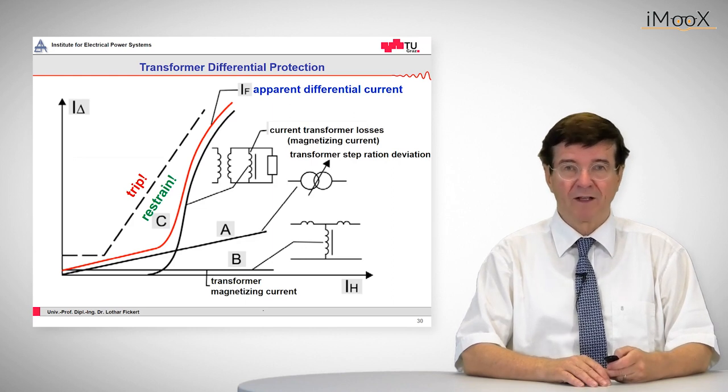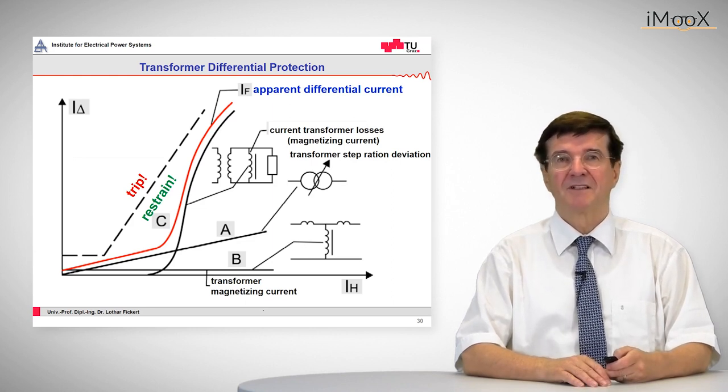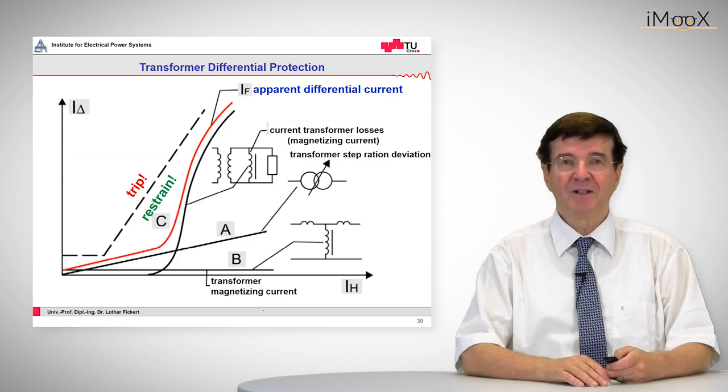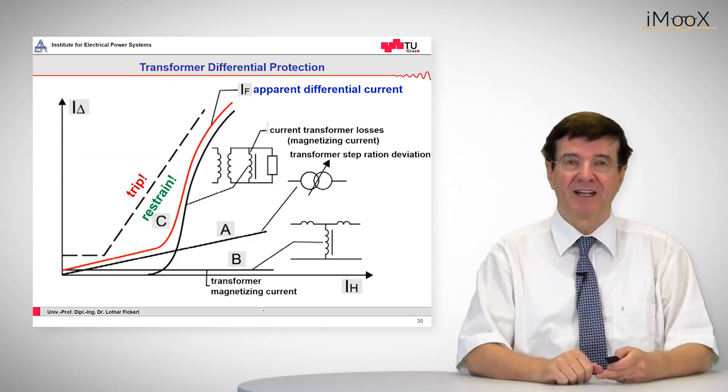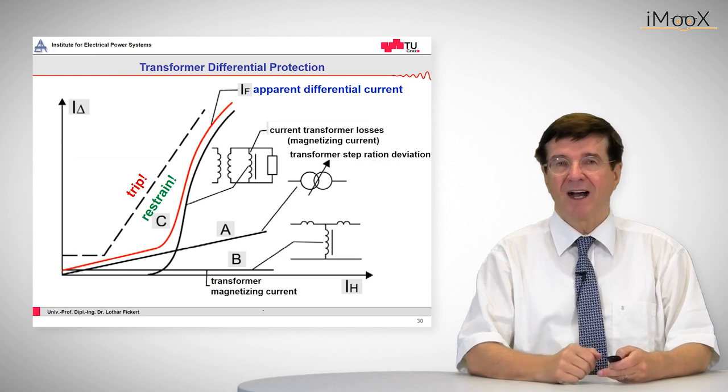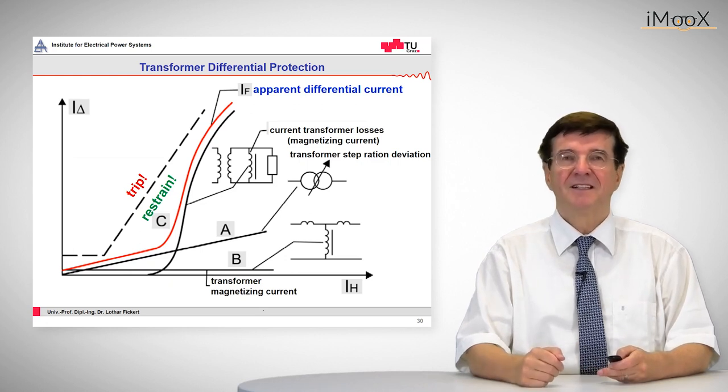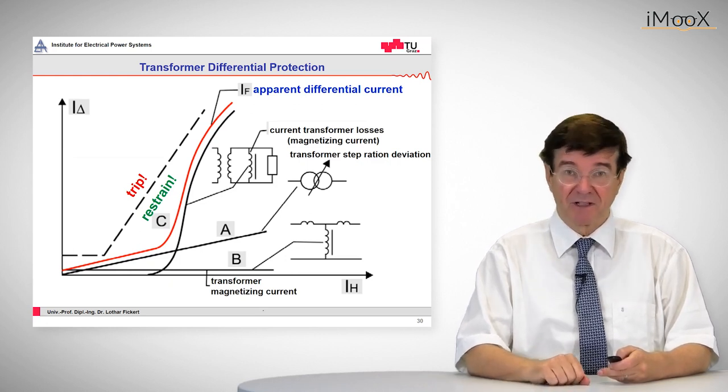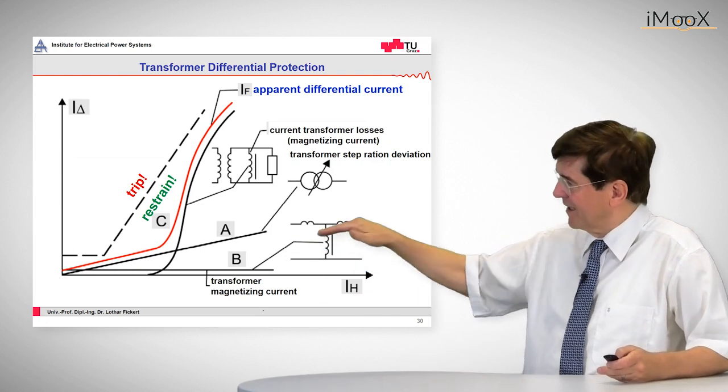For example, one is if we have a tap changing transformer where the ratio between the primary and the secondary side varies. Then the higher the through current is, the bigger is the apparent differential current. So this is a straight line that goes up.